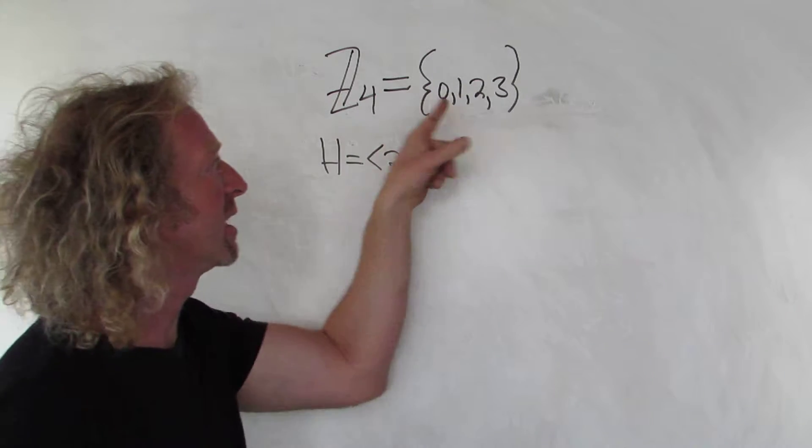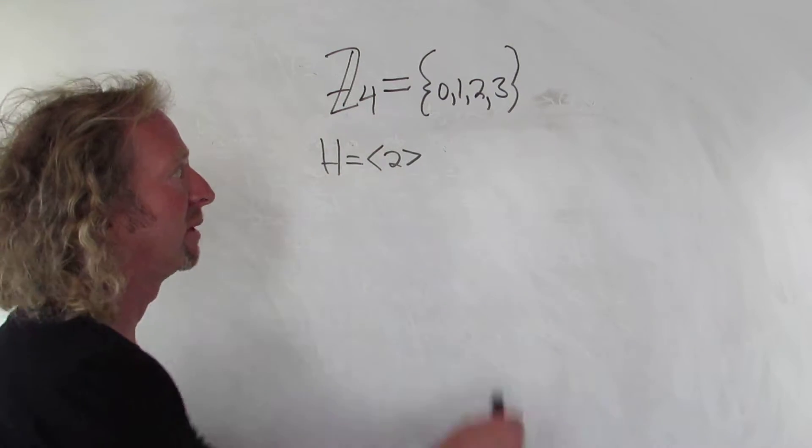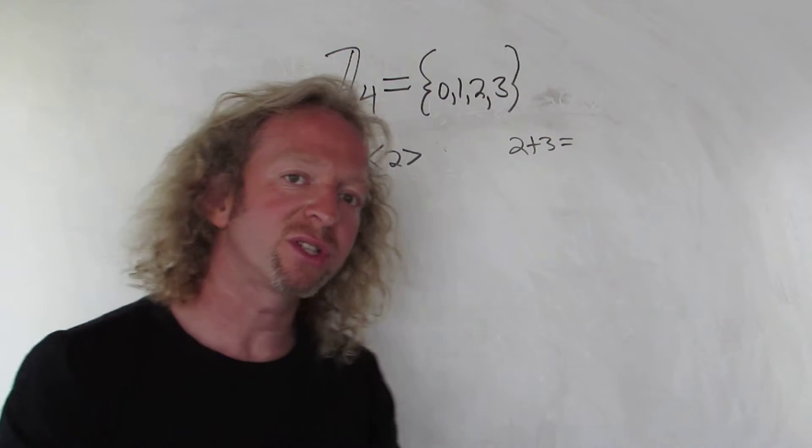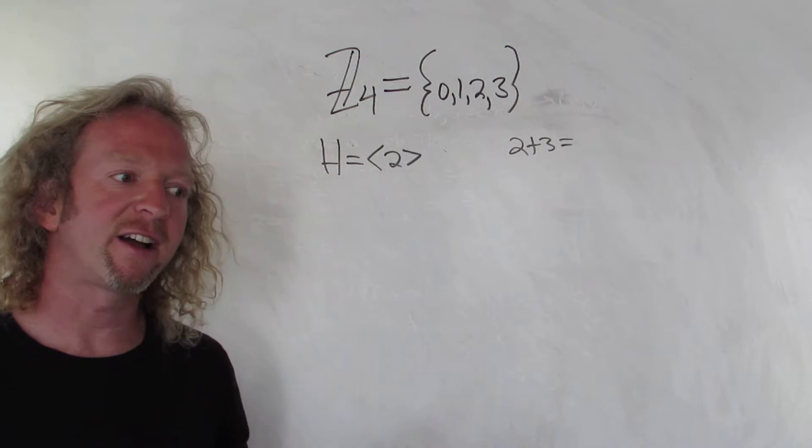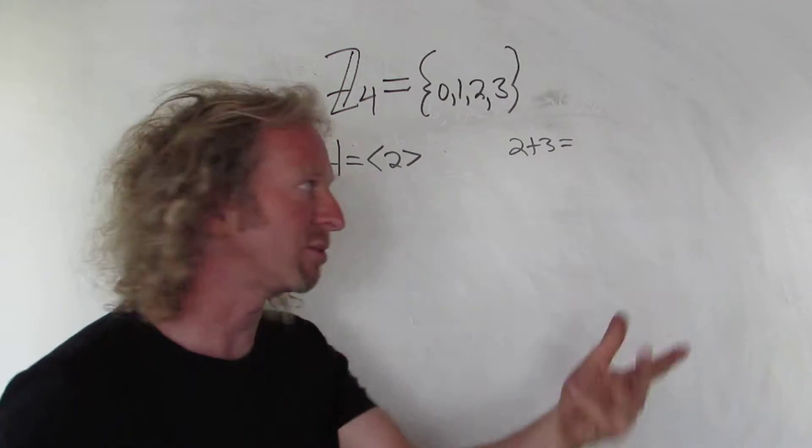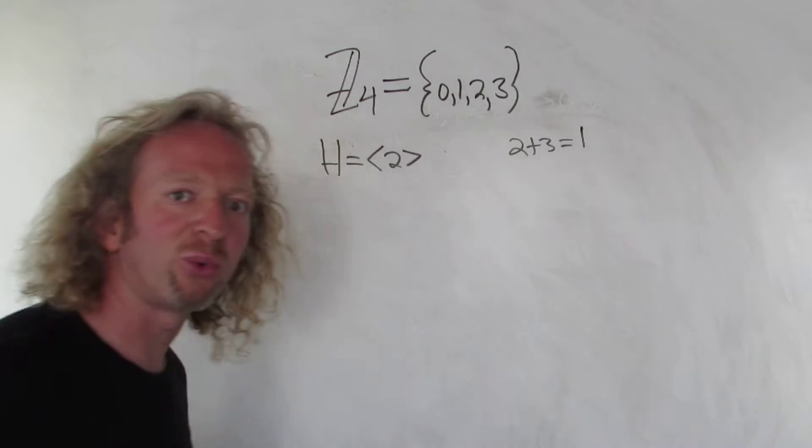So addition here takes place modulo 4. If you're not familiar with this, 2 plus 3 for example is 5. But the question is, when you divide 5 by 4, what's the remainder? So 4 goes into 5 one time, the remainder is 1. So 2 plus 3 is equal to 1 in this group.